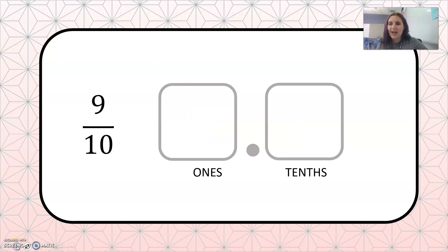Next we have 9 over 10. This is read as 9 tenths. So how can we write this as a decimal? Well, we have 9 tenths, so we put a 9 in the tenths place. And again, use that placeholder 0 to make the number easier to read. 0.9, 9 tenths.